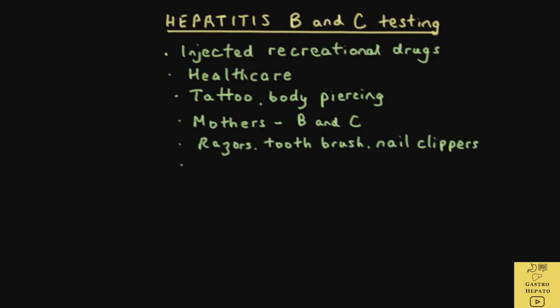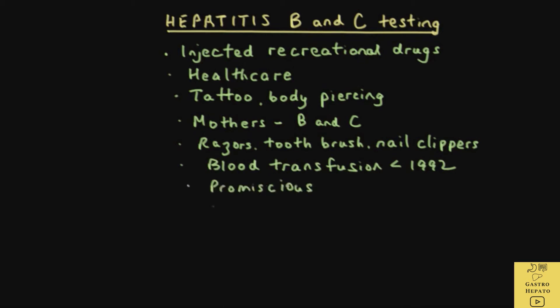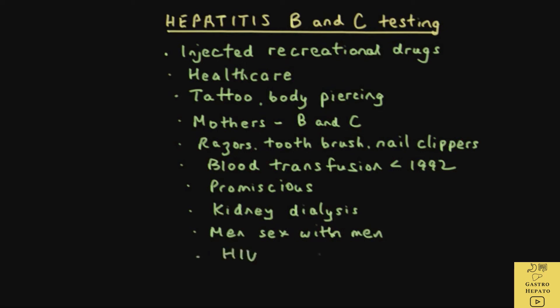Anyone who had a blood transfusion before 1992. People who are promiscuous and had unprotected sex with infected persons, particularly prostitutes. Those who are on kidney dialysis, men who have had sex with men, and anyone infected with HIV.